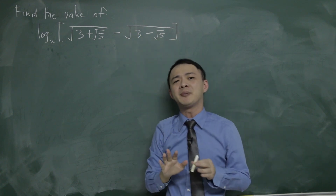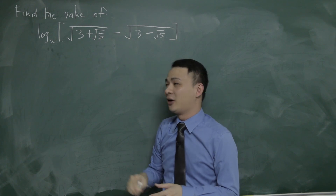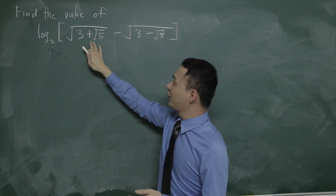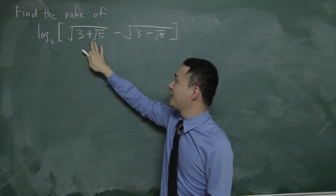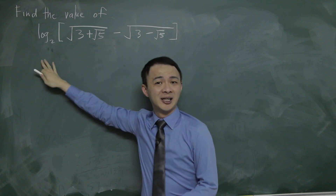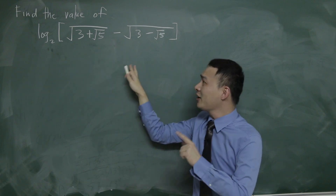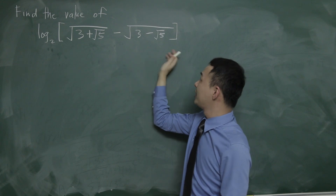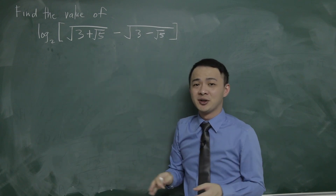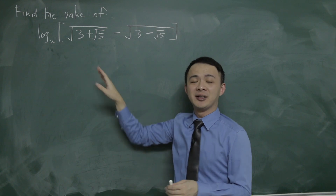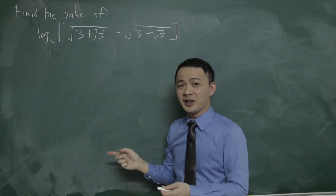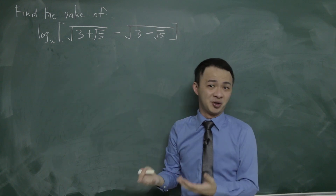Because we're dealing with square roots — what we call 'surd' — if you have a plus or minus in the middle like this, it's quite impossible to just expand or separate them for the log. So for this kind of question, there's only one way you can solve it, which is substitution.